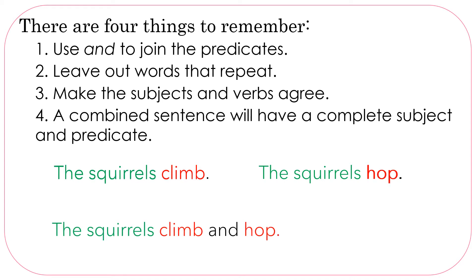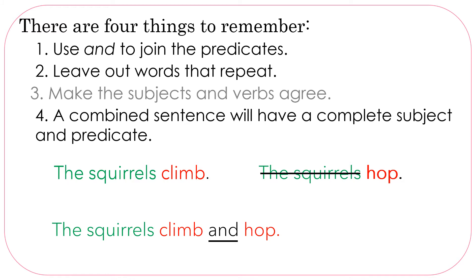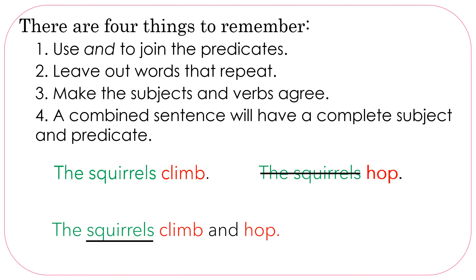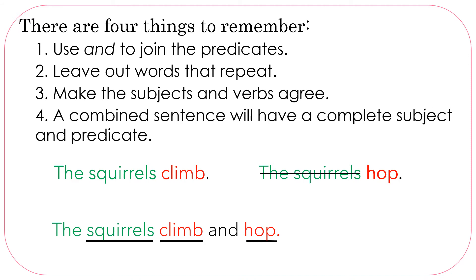Did we follow our rules? Did we use AND to join the predicate? Yes, we did. Did we leave out words that repeat? We left out 'the squirrels' — we didn't need to say it again. Did we make the subjects and verbs agree? There's one subject, 'squirrels,' which is plural. Climb and hop are plural verbs — they don't have S's on them. A combined sentence will have a complete subject and predicate: 'the squirrels' is the complete subject; 'climb and hop' is the complete predicate.